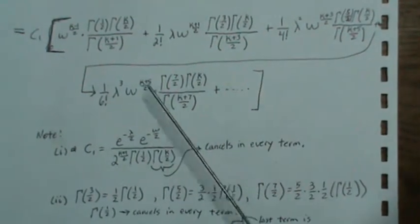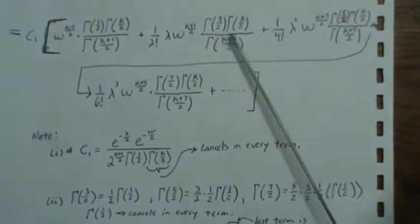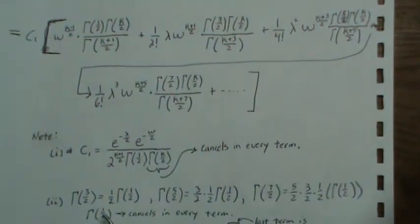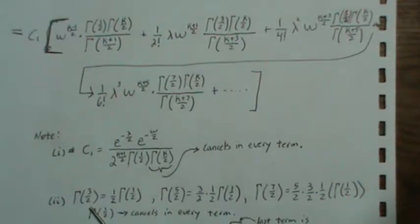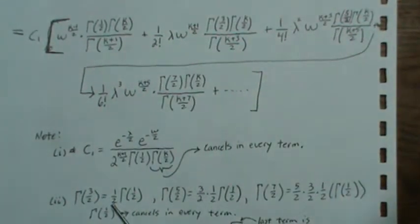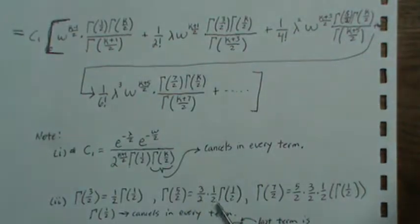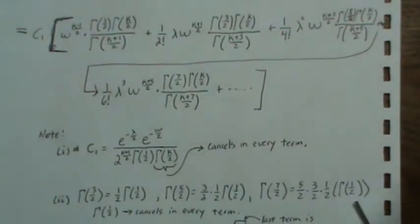One property here we have a gamma of a half, we have gamma 3 over 2, gamma 5 over 2, but the gamma function has an interesting property that gamma 3 halves is 1 half gamma over the 1 half. Gamma 5 over 2 is 3 over 2 times that and you can just keep going in this fashion.